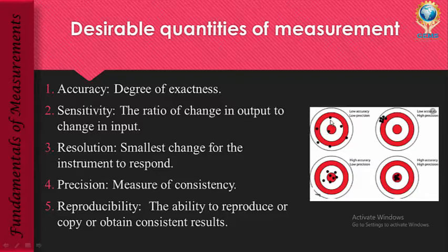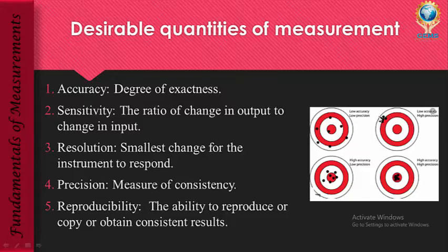When the values are randomly arranged and not the same, it is low accurate and low precise. Similarly, in the case of low accuracy and high precision: I want my values to be at the center, but I am getting all the values clustered in one particular spot elsewhere. All the values are copied in that particular spot — so precision is high, but accuracy is less because the spot is not where I want.